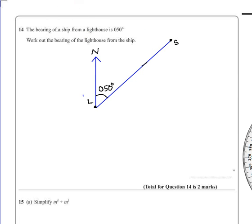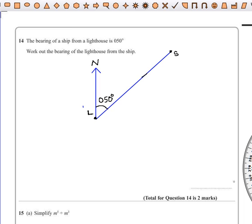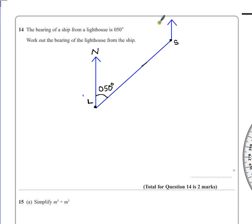So to find a bearing, we need to make sure that we draw on our north line from the ship. This has to go straight up. We should follow the direction that we used for north before. Label it with a little N to remind ourselves that that's north. And then we can measure this angle here, which will give us a bearing, clockwise from north, of the lighthouse from the ship.